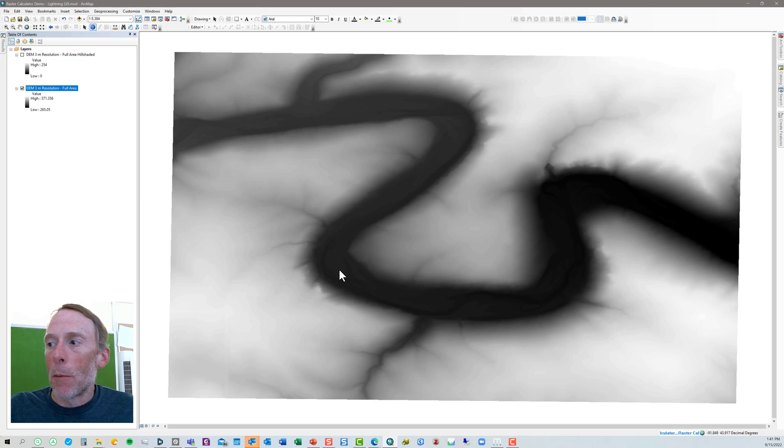Then what we'll do is we'll click OK and it'll take a few moments. You can see down here in the lower right the raster calculator is running and when it's through it will write the file and then add it to the table of contents.